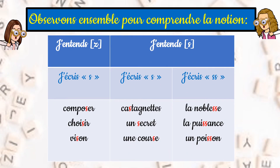Observons ensemble pour comprendre la notion. Regardons le tableau. J'entends Z, j'écris un seul S. Par exemple : composer, choisir, vision. J'entends Z, j'écris un seul S dans castagnette, secrets et courses.